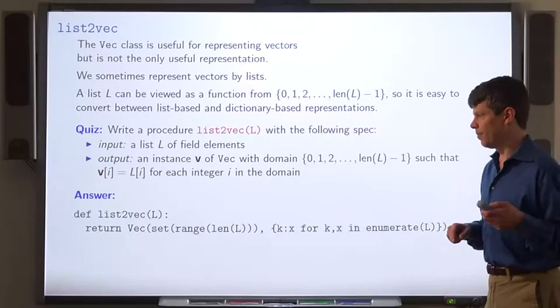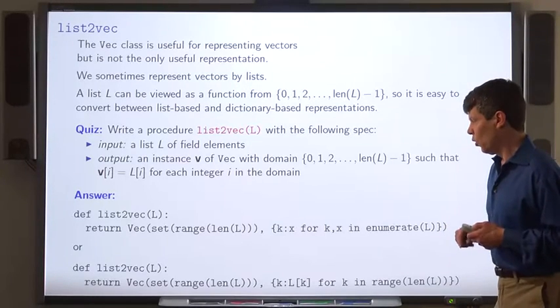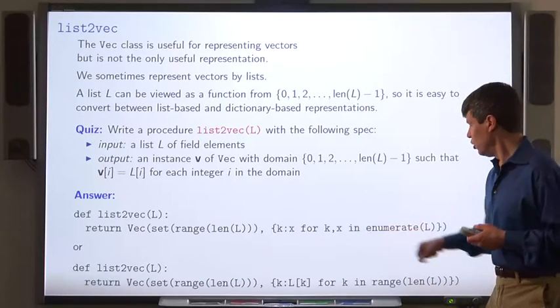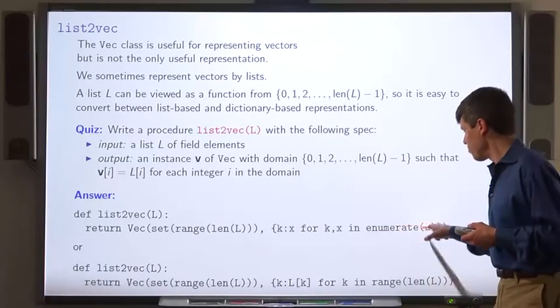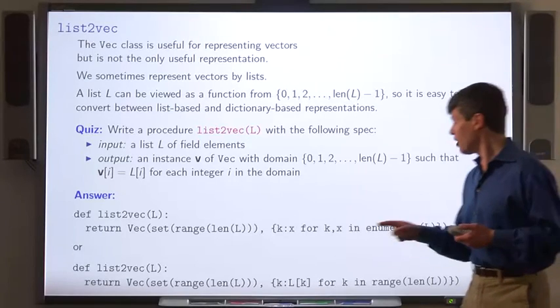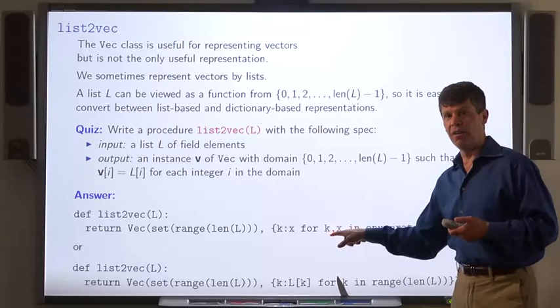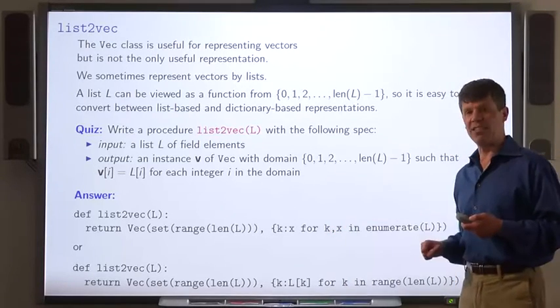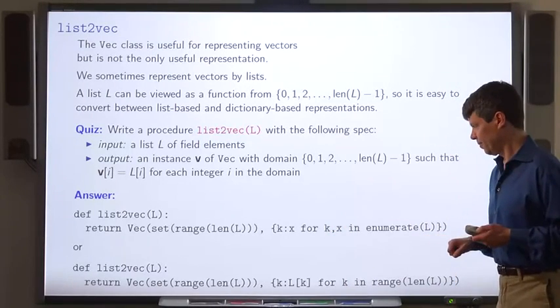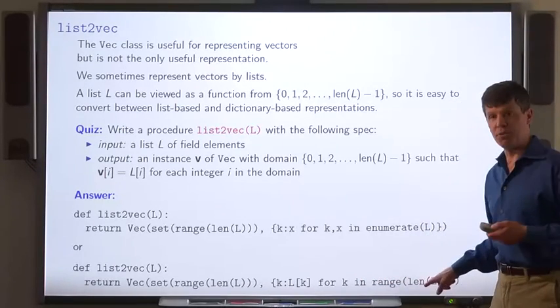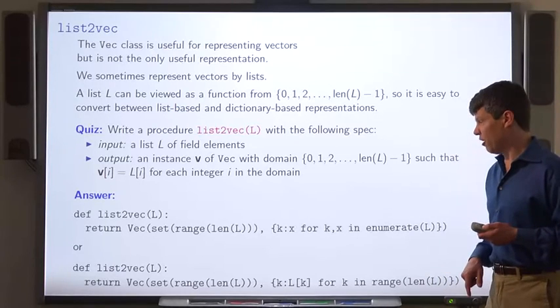Here's the answer. Here's an alternative. This first solution uses this handy enumerate procedure, which allows you to enumerate over the pairs kx, where k is an index into the list and x is the corresponding element. And this is using a more traditional loop in which we iterate through the indices into the list.